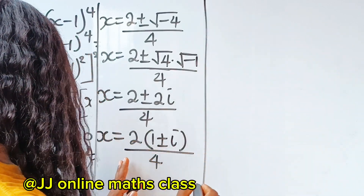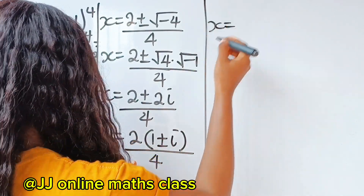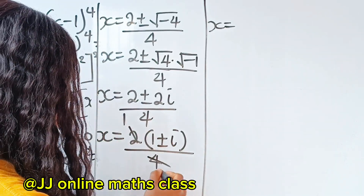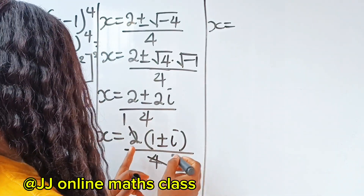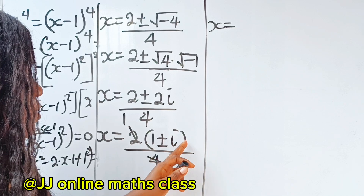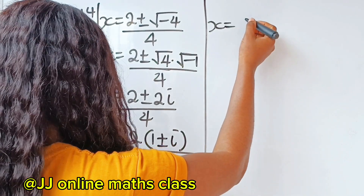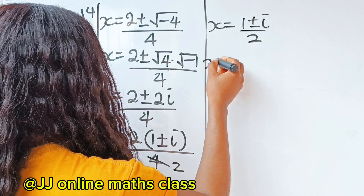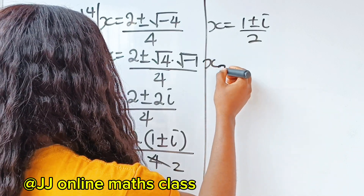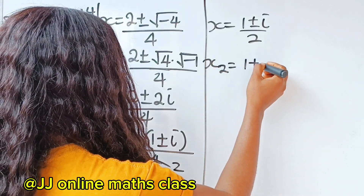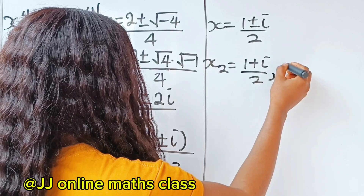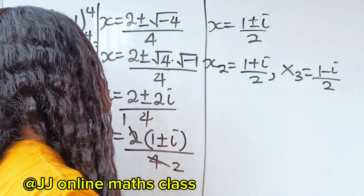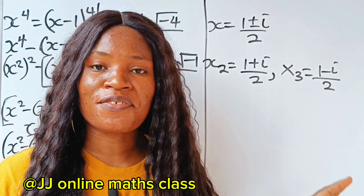When 2 divides itself we have 1, and when it divides 4 we have 2. Therefore x equals 1 plus or minus i, divided by 2. The next value is x equals 1 plus i divided by 2, and the other value is x equals 1 minus i divided by 2. These are all the values of x.